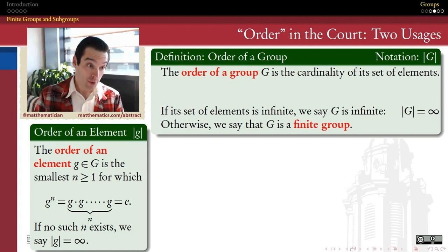What is the order of a group? The order of a group is a very simple definition. All it is, is it's the cardinality of its set of elements. It's an answer to the question, how many elements are there in my group?